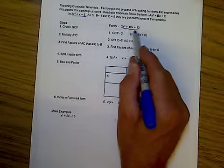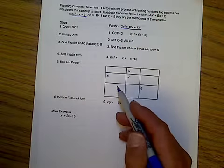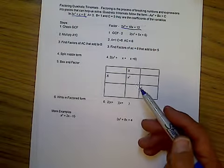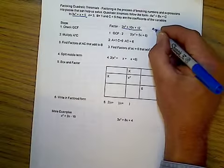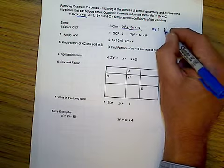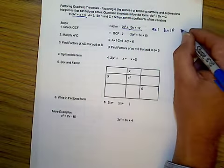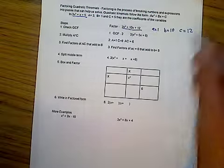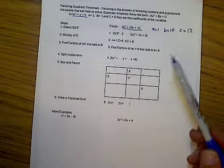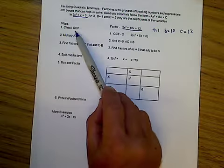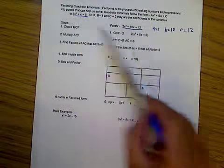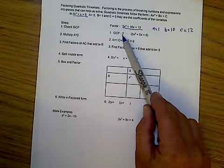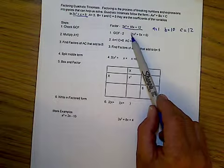Now let's actually factor this one here. 2x² + 10x + 12. In this case, our a equals 2, our b equals 10, and our c equals 12. So our steps are: first, we're going to check to see if there's a greatest common factor. Our greatest common factor in this instance is 2, and I'm going to factor that out.